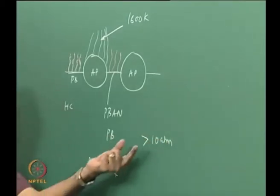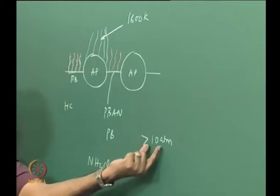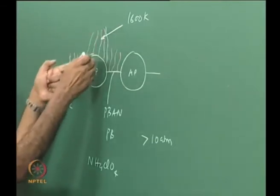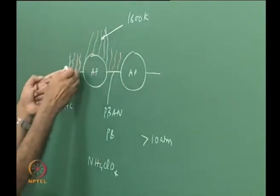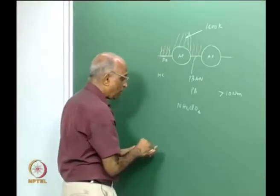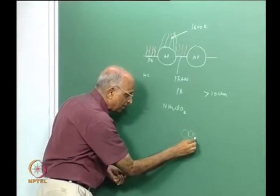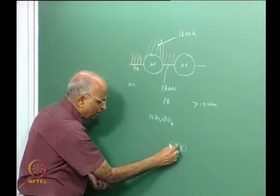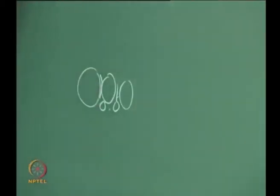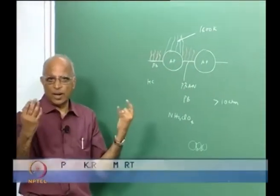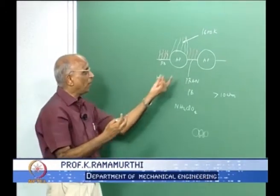At around 1 MPa pressure, I have the AP flame coming here and fuel vapour coming from the binder. In practice, I have AP particles of various sizes — around 300 microns coarse and 30 microns fine — with aluminium in between. I am magnifying and separating this zone to formulate a model — a model I can write an equation for.